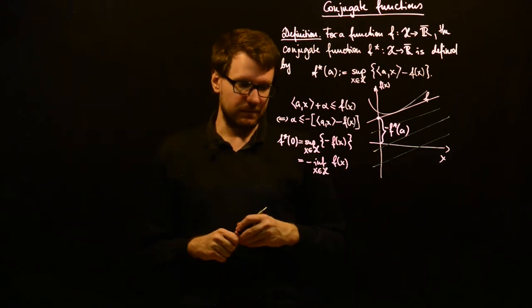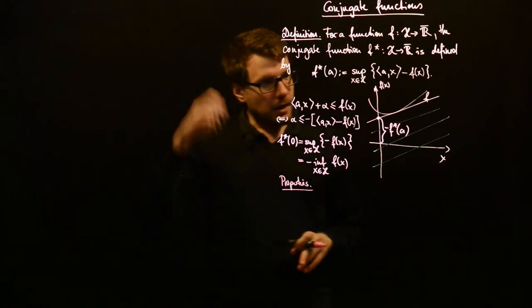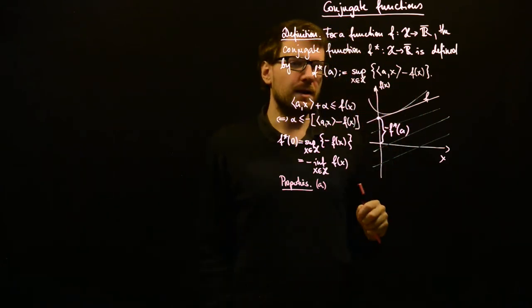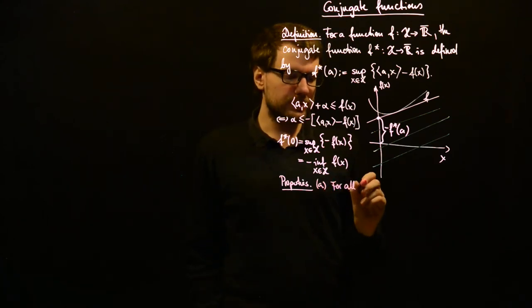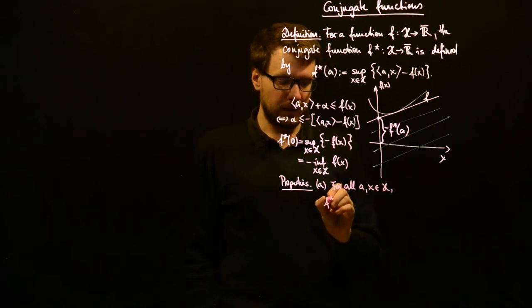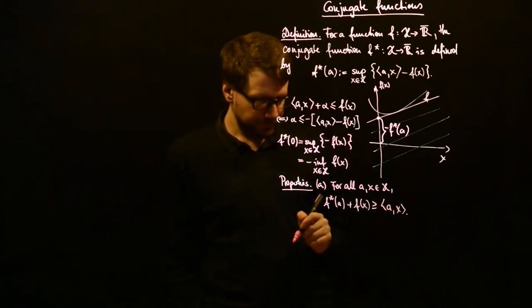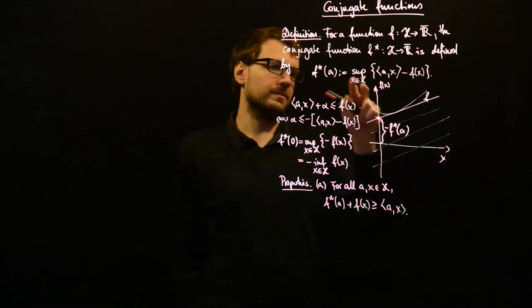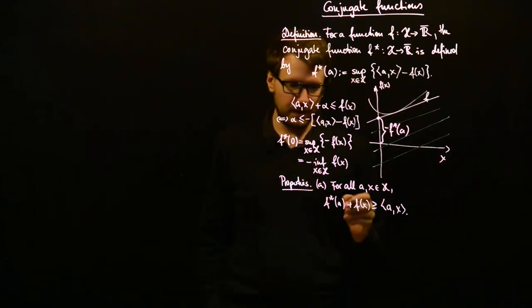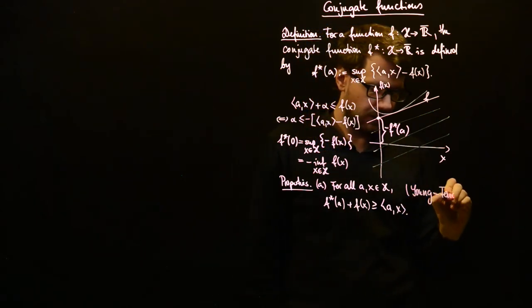Now let's discuss some properties of conjugate functions. The first property is very obvious: we have a supremum over some values, so if we choose some a and x arbitrarily, we get that f star of a plus f of x will always be greater than or equal to the inner product between a and x. This is called the Young-Fenchel inequality.